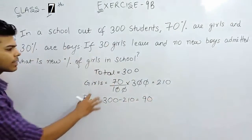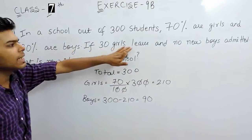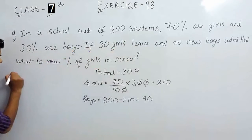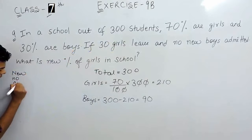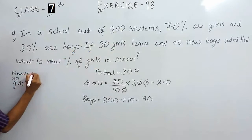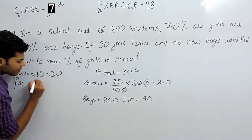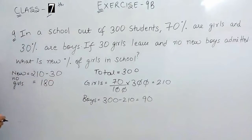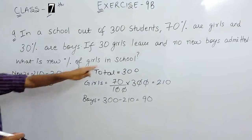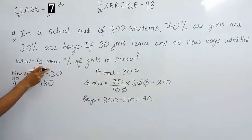So boys are 90 and girls are 210. Then the question says 30 girls leave the school. So new number of girls will be 210 minus 30, and that will be 180. So new number of girls is 180 and no new boys are admitted. So we have to find the new percentage of girls.